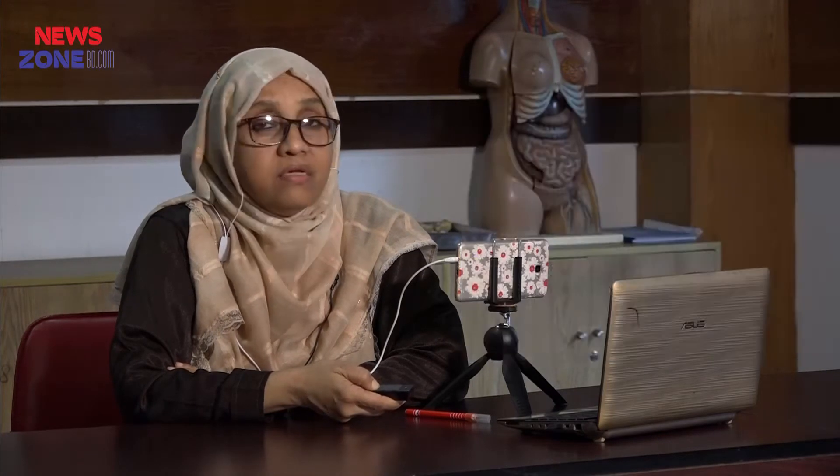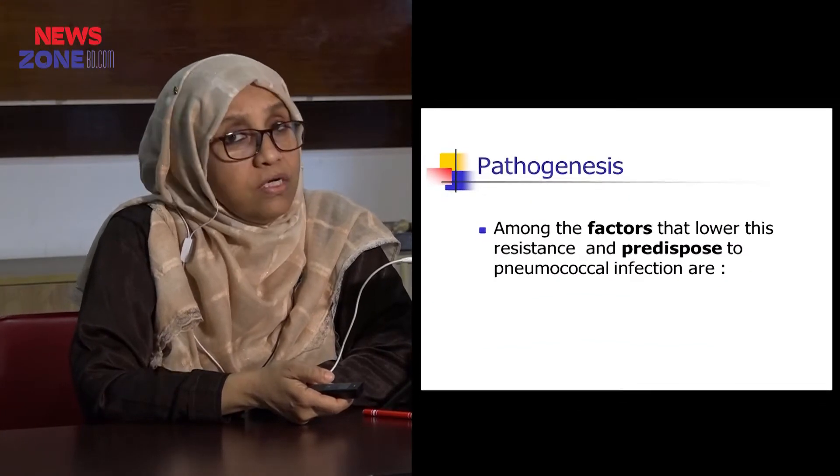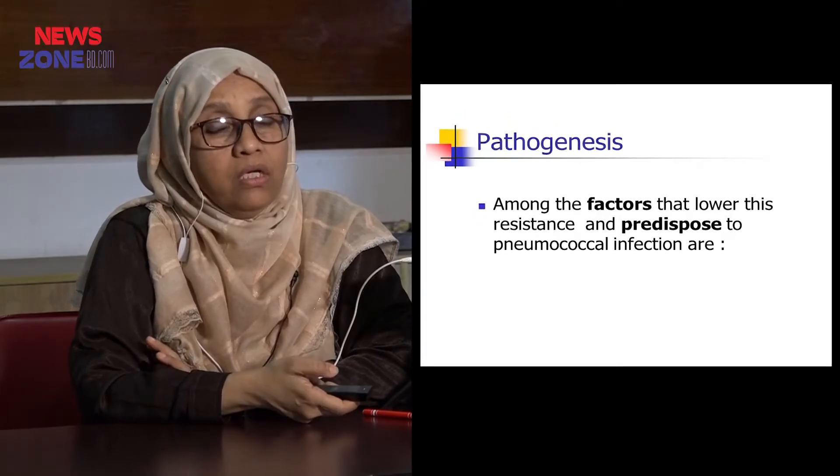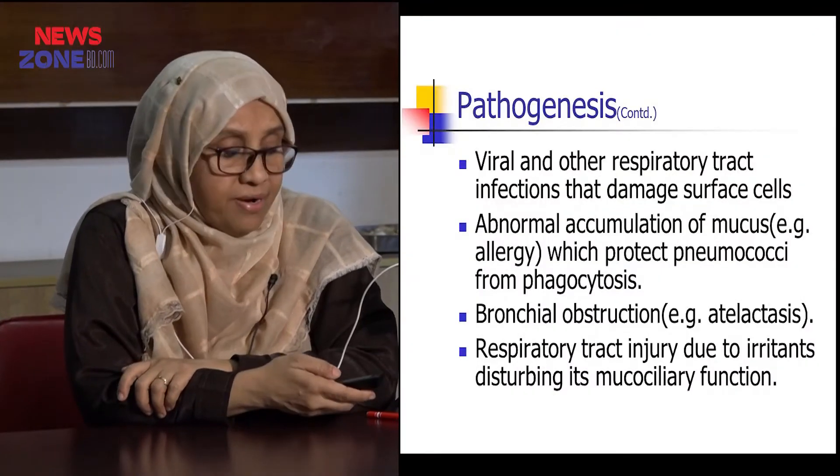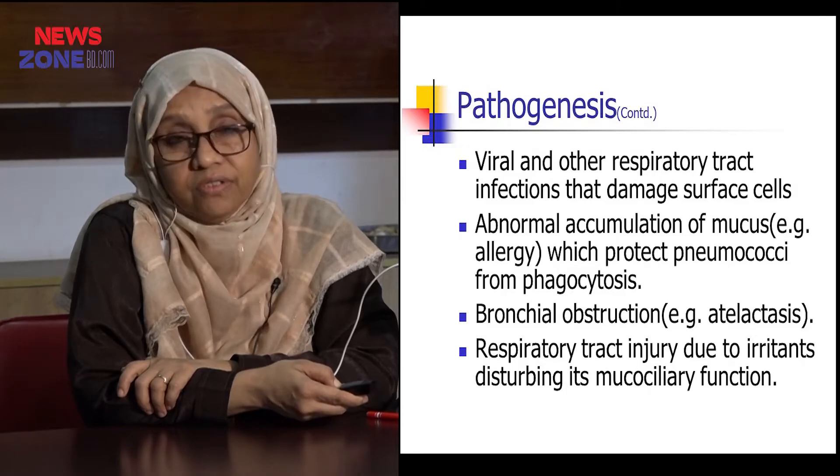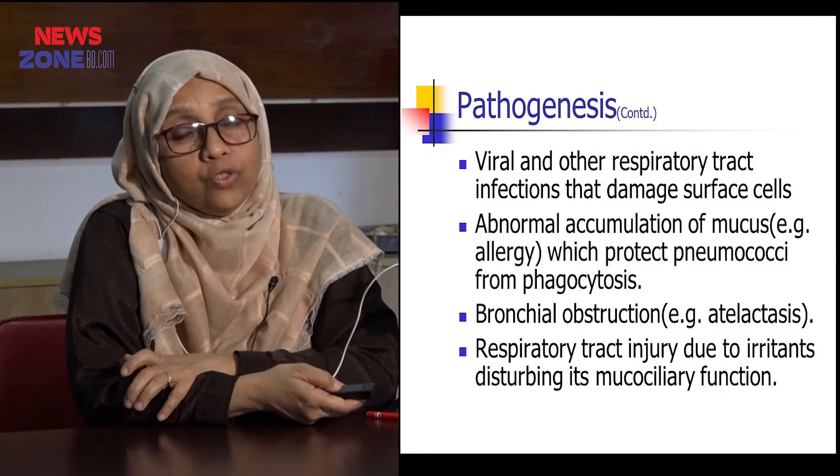The normal respiratory mucosa has great natural resistance to pneumococci. However, among factors that lower this resistance are: viral and other respiratory tract infections that damage cell surface cells, which are liable to cause post-viral streptococcal pneumonia; and abnormal accumulation of mucus or allergy, which protects pneumococci from phagocytosis because mucus inhibits phagocytic cells and the organism also has a capsule.